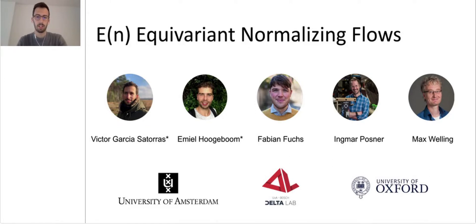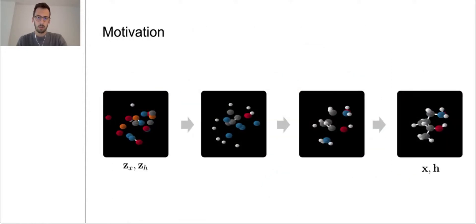The work is called E(n) Equivariant Normalizing Flows. In this work, we present a generative model for point cloud data equivariant to Euclidean transformations with one of its main applications in molecule generation.